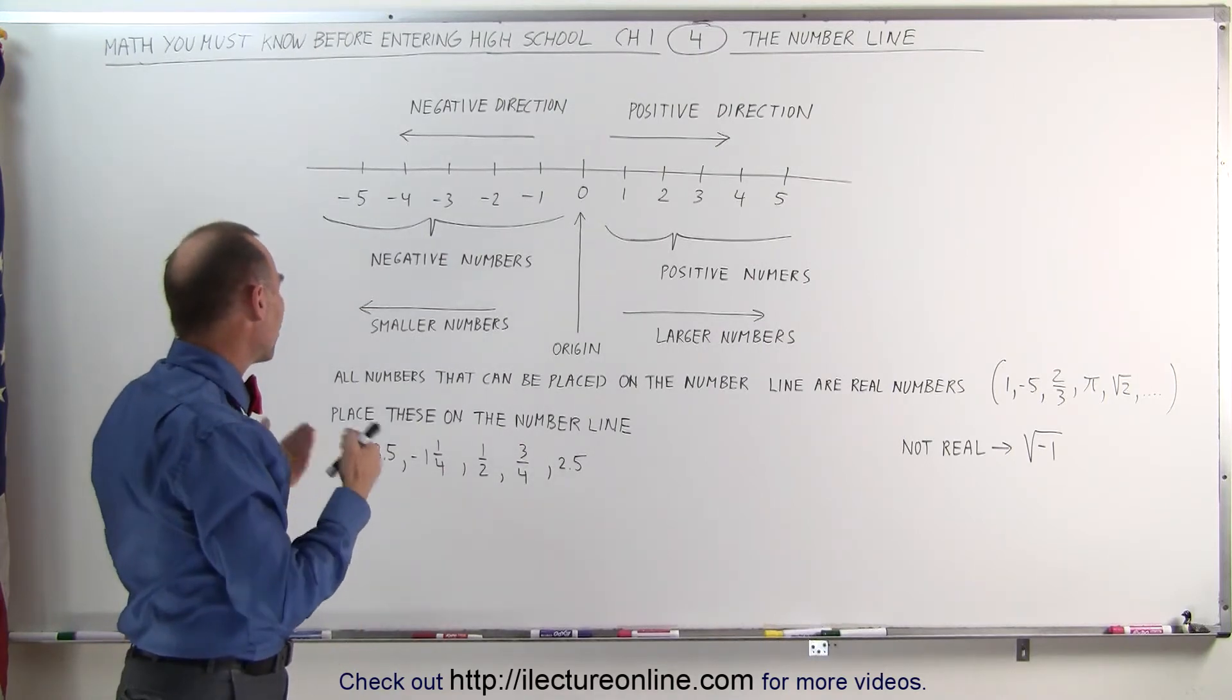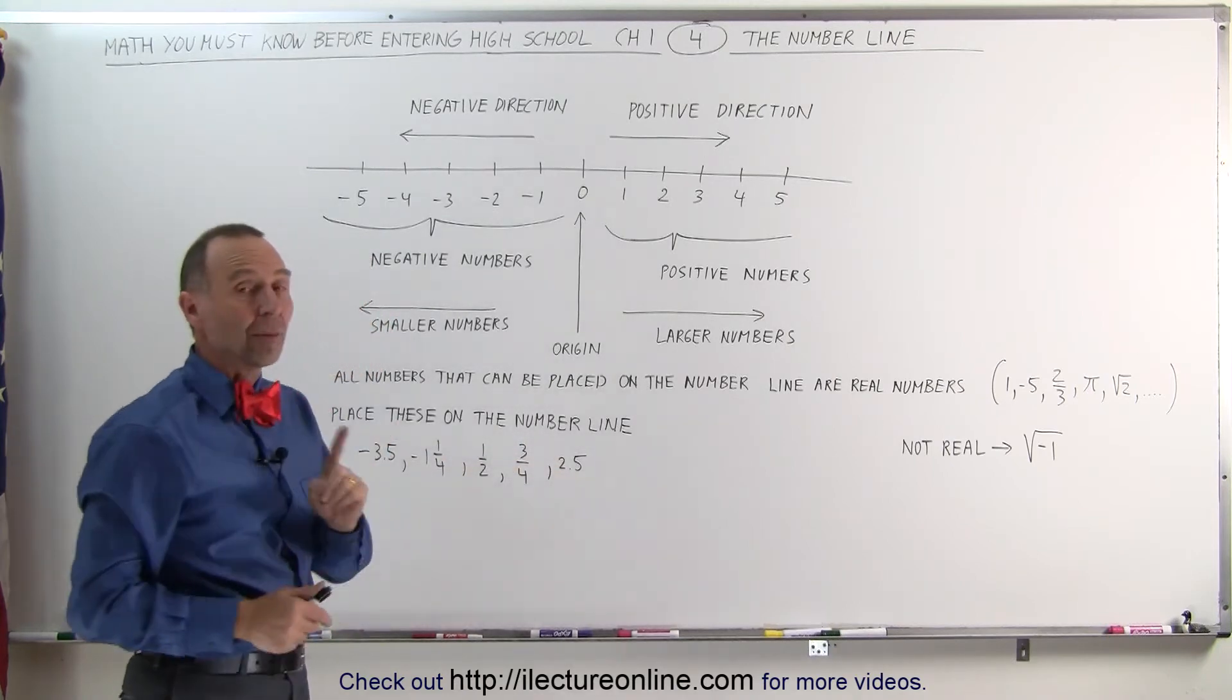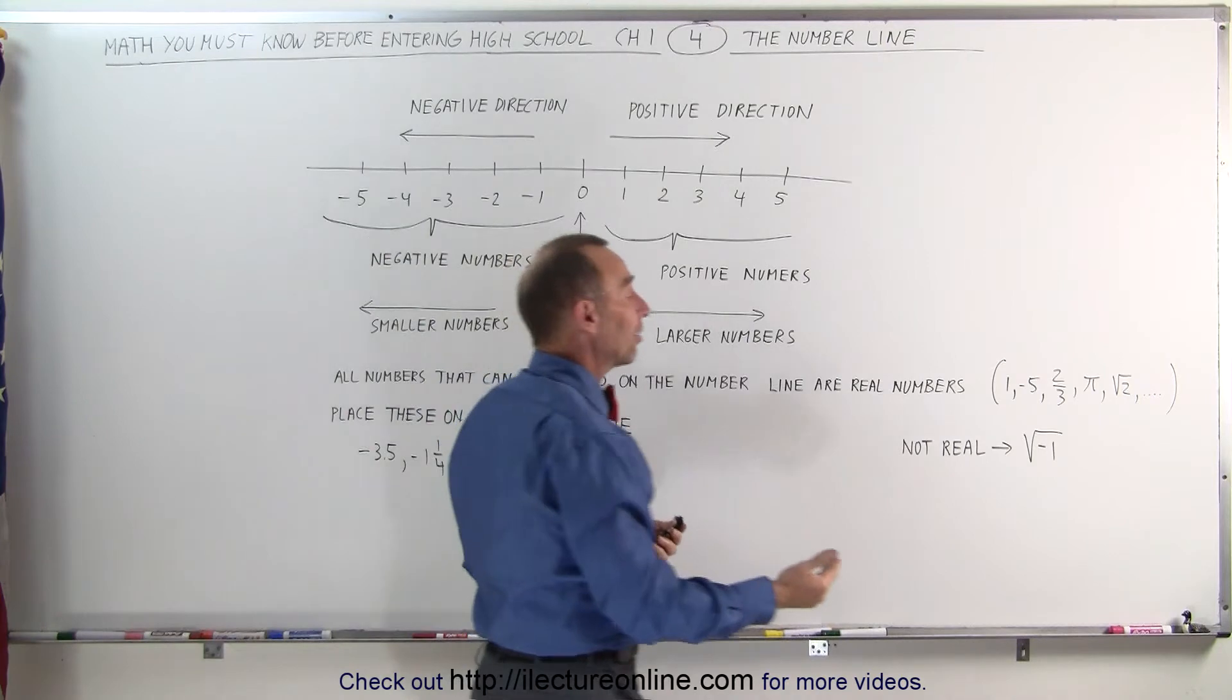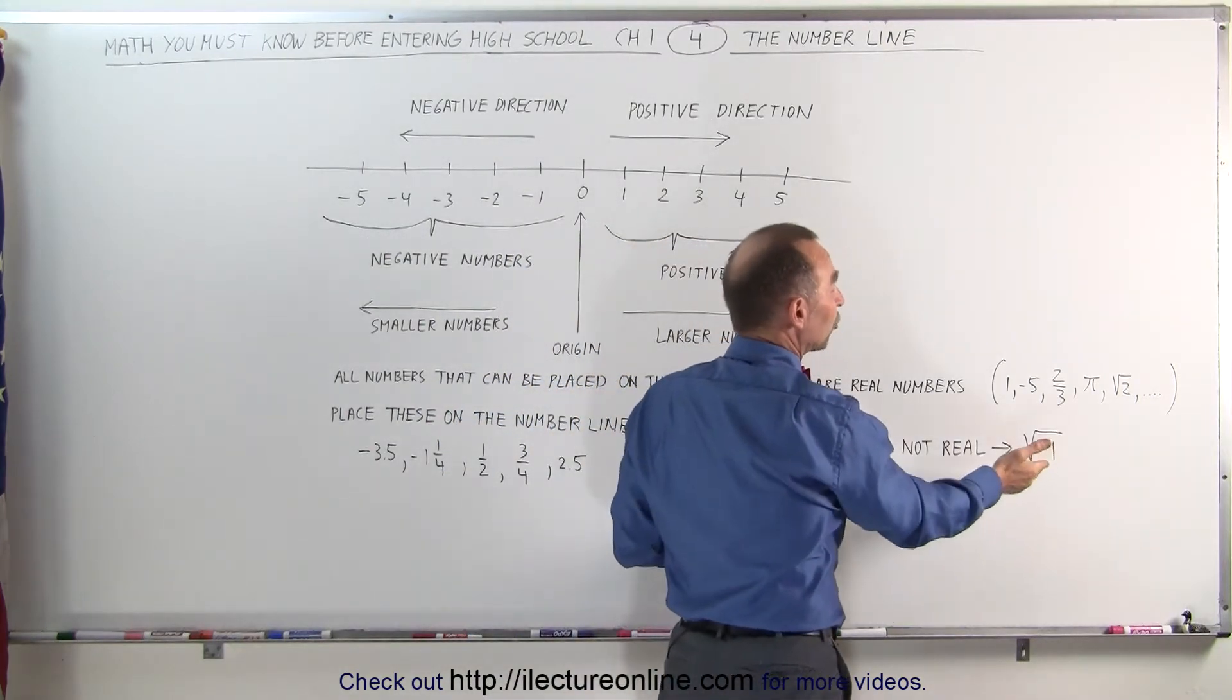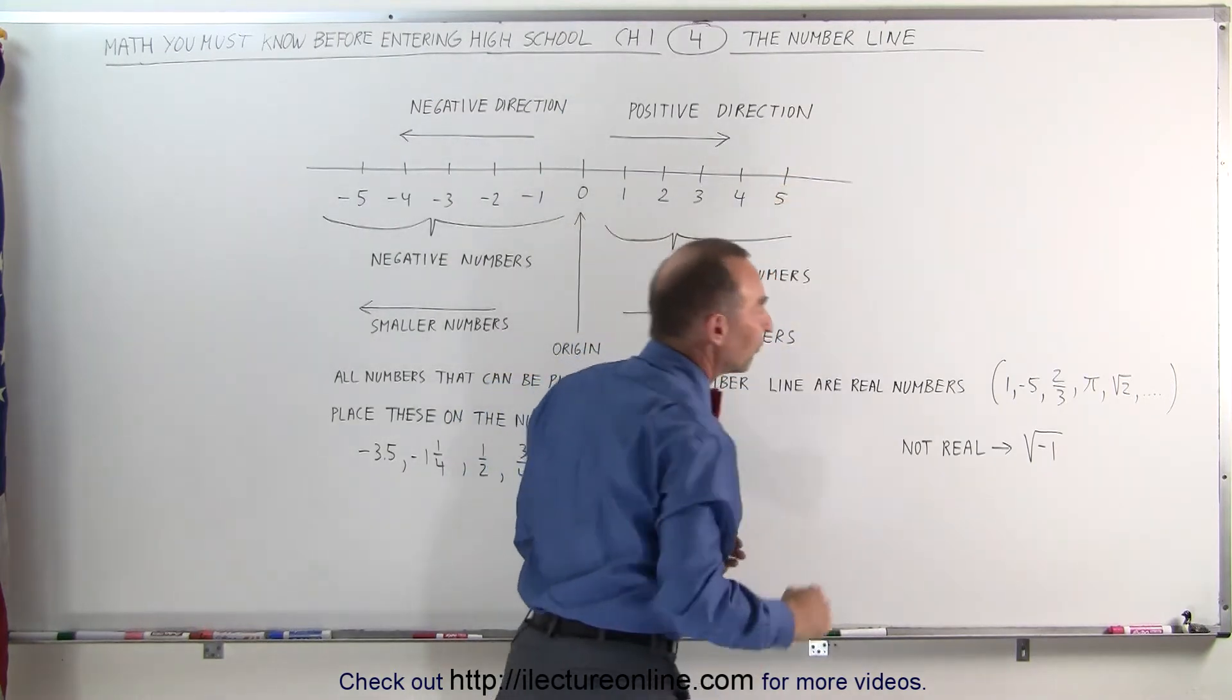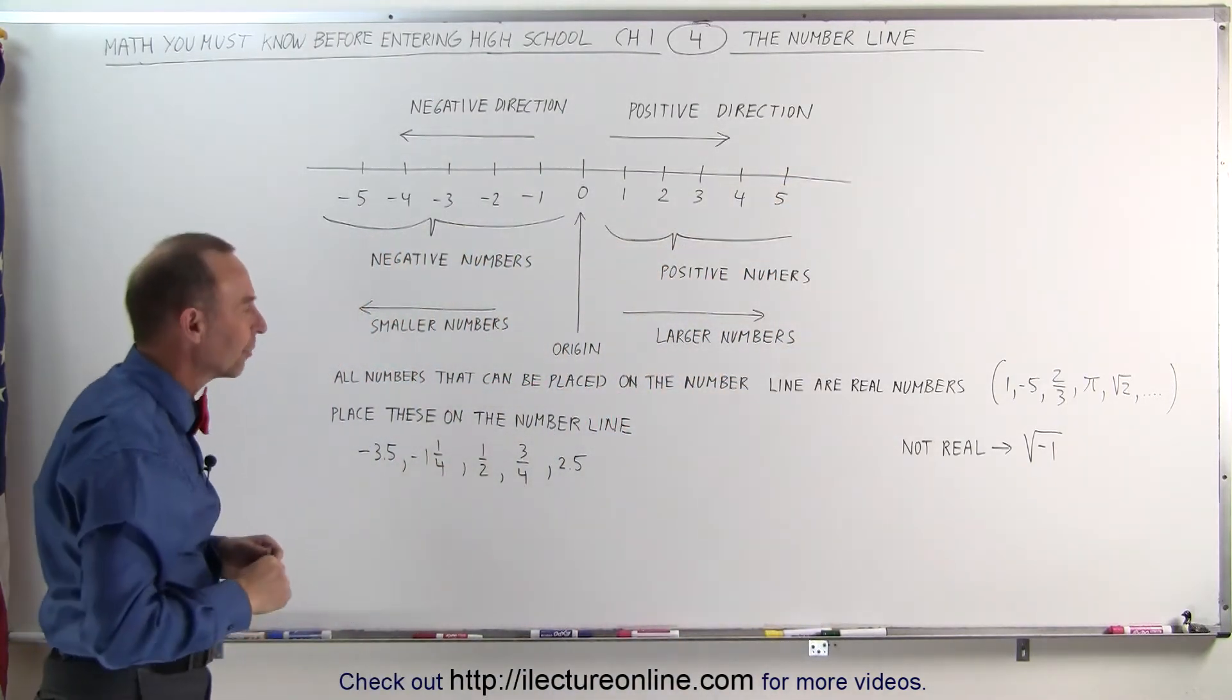Now let's try to move some of these numbers onto the number line. Here's some examples of that. And notice I put one number that is not real, it's not a real number, which cannot be placed on the number line. For example, the square root of negative 1 has no place on the number line where that will fit. Therefore that is not a real number and we'll cover that in a later video.